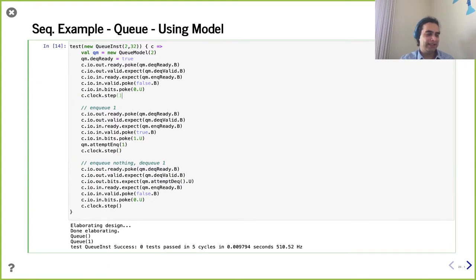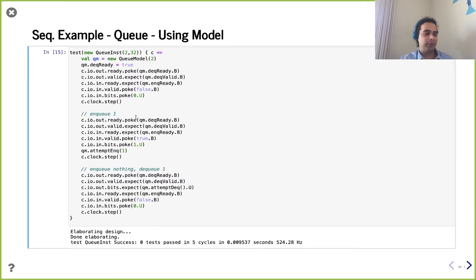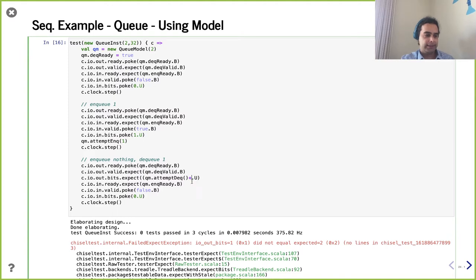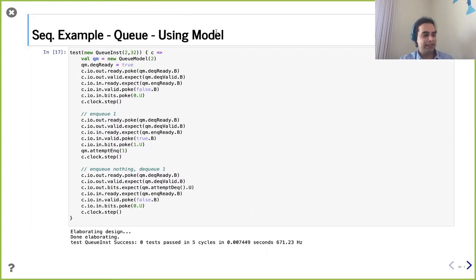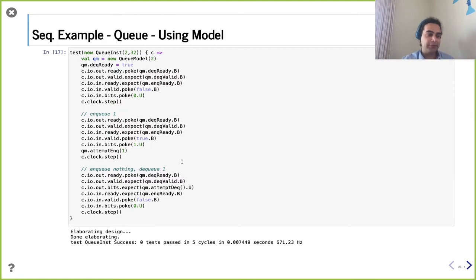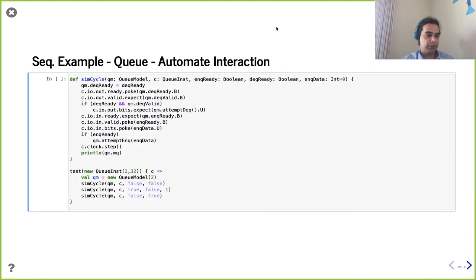So this little example — enqueue once and then dequeue it — the dequeue happens and we're expecting it. If it didn't match up, for example if we added plus one, we'd get an exception because it didn't match. But it does match up. This is becoming untenable — there are a lot of interfaces here being set, poked, and expected. So what we want to do is put these together into more manageable abstractions, which also makes it easier not to make mistakes. Let's automate that interaction.